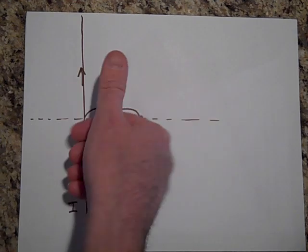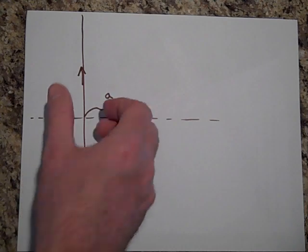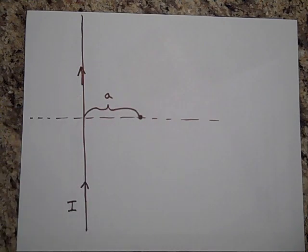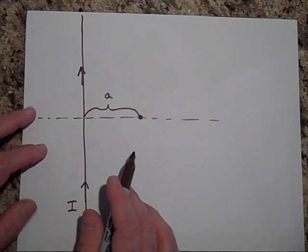the direction of the field right there is going to be into the page. So if I put a compass right here, if I put a compass there, it's going to point down. If I put a compass on this side, it will point up. Okay, but I'd like to know what the field is there, the strength of the field.